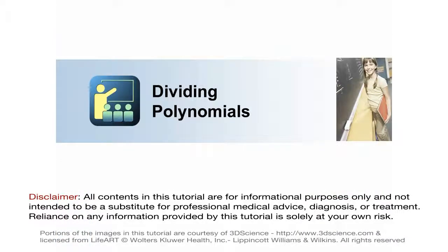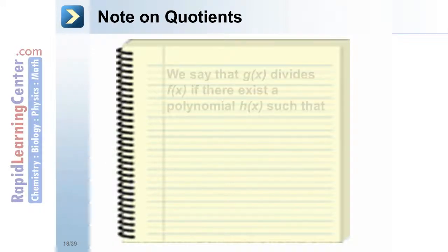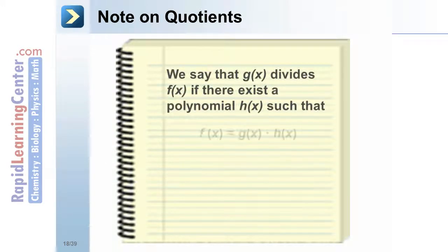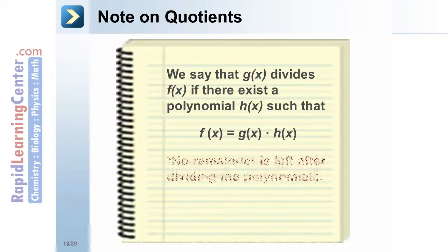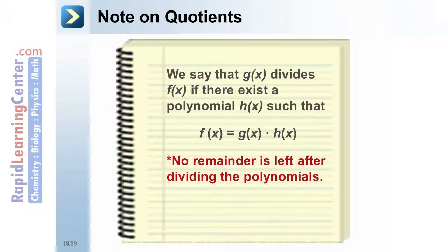This section will discuss dividing polynomials using long division and synthetic division. Note on quotients: we say that g divides f if there exists a polynomial h such that f equals g times h. In other words, no remainder is left after dividing the polynomials.